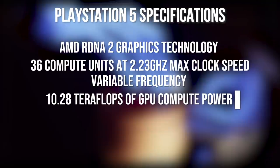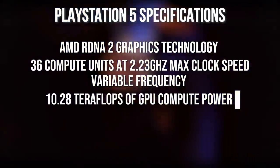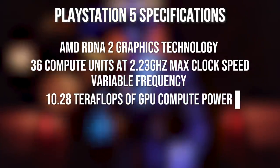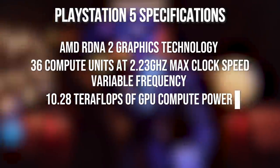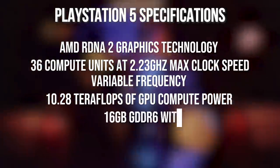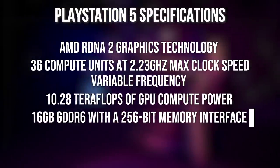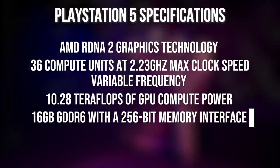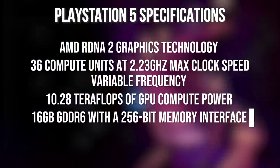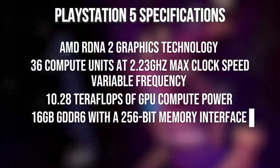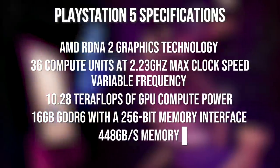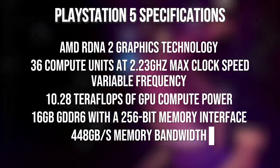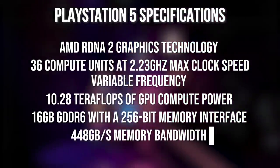One thing I can confirm which wasn't in the presentation: there is a 256-bit memory interface with 16 gigabytes of GDDR6 using 14 gigabit per second modules, giving 448 gigabytes per second of bandwidth. That was in the AMD test leak.